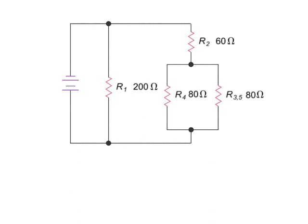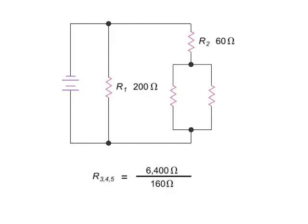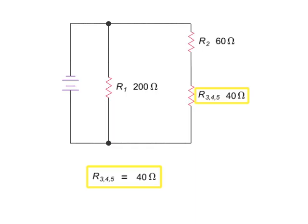Now, the R4 resistor and the equivalent resistance of the R3 and R5 resistors are in parallel. Their combined resistance can be calculated by dividing their product by their sum. Thus, using the product over sum equation, we have 80 times 80 equals 6400 divided by 80 plus 80, which is 160, giving 40 ohms. Now, we have further reduced the circuit to two resistors in series, R2 and the equivalent resistance of the R3, R4 and R5 resistors.